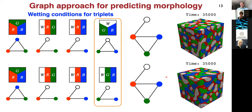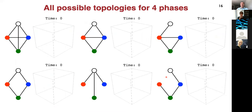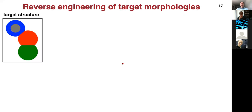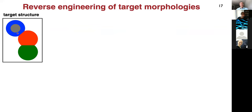The final step we wanted to do is also reverse engineer conditions that would give rise to certain structures. Let's say your biology colleagues tell you they would really like to have a structure like this — we need to tell them what sort of molecules they would need, and what should be their interactions in order to get this target structure.